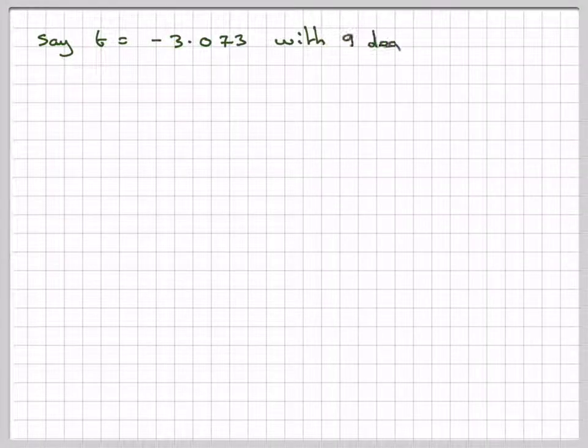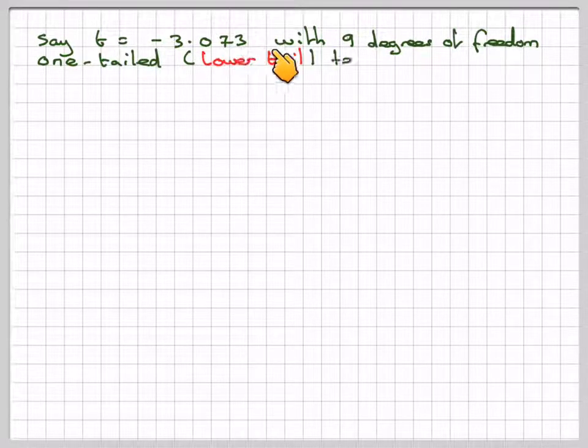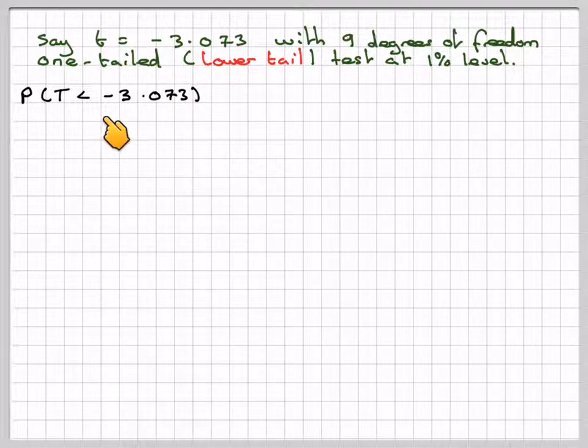Say we now have t = -3.073 with 9 degrees of freedom, and we've got a one-tailed test at the 1% level. We need to calculate the probability that t is less than -3.073 for 9 degrees of freedom.